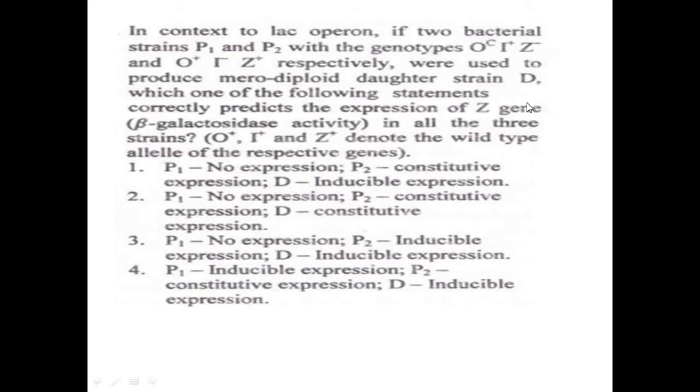Hello friends, today in this video we will discuss CSI UGC NET based questions on lac operon which are usually asked in group C. The question involves two strains having genotype: OC I+ Z- (where OC is operator, I is inducer, and Z is the beta-galactosidase gene), and the other with genotype O+ I- Z+.